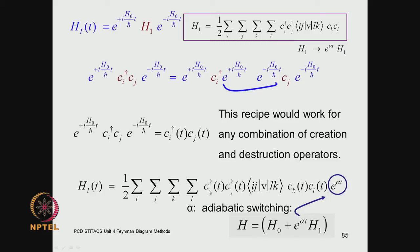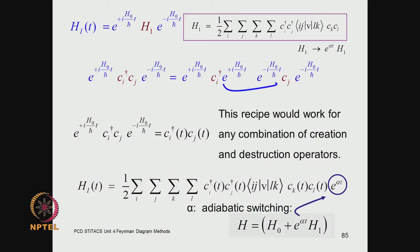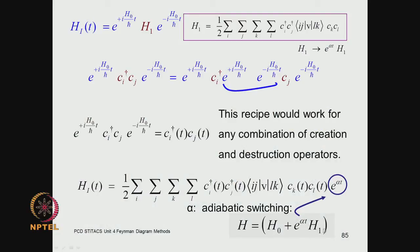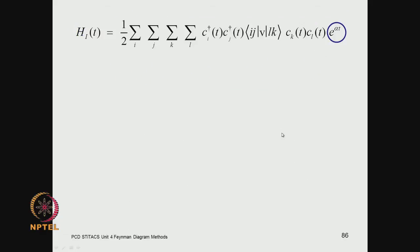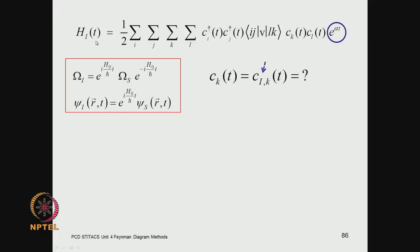So we have the interaction picture Hamiltonian corresponding to the two-electron terms: c_i†(t), c_j†(t), c_k(t), c_l(t), along with e^(alpha*t) from the adiabatic hypothesis. This is the interaction picture two-electron term — the difficult part which cannot be solved using ordinary quantum mechanics. With ordinary quantum mechanics you can only solve H0; H1 is the difficult part.